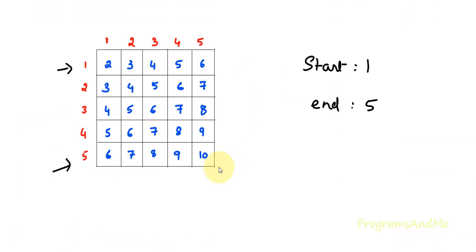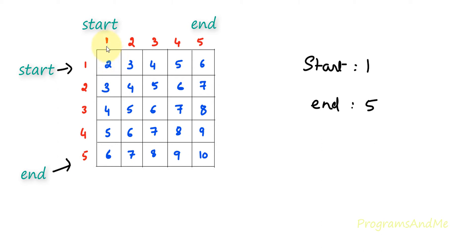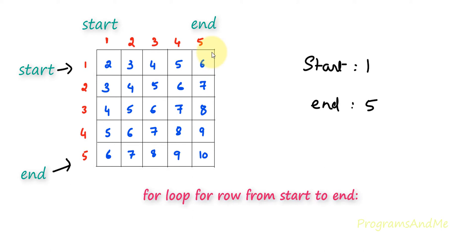Now we are done with the input. Next we need to print the addition table. If I look at this addition table it looks like a pattern — it has rows and columns. Here we can see these are rows and these are columns. If I enter start as 1 and end as 5, the row will start from 1 and end at 5, and the column also starts from 1 and ends at 5. That's why to print this addition table we need two for loops: one for loop for row and another for loop for column.